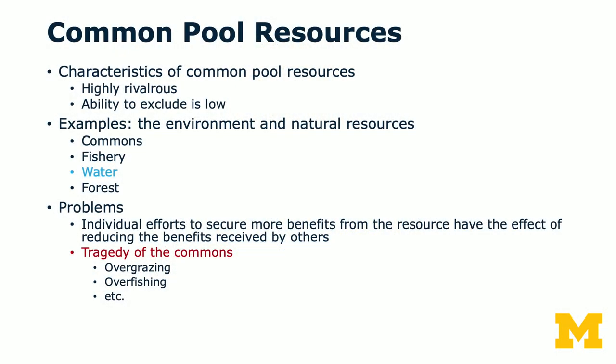So the stuff that we consume in everyday life — for instance, broccoli, breakfast cereal — these are all private goods. What we're going to talk about today is common pool resources. These goods are rival, but they're not excludable or difficult to exclude. The first dimension is that they're highly rival. The second one is that the ability to exclude others from consumption is low. In fact, a lot of the environmental and natural resources belong to this category of common pool resources.